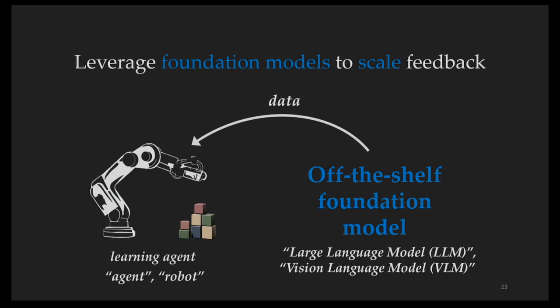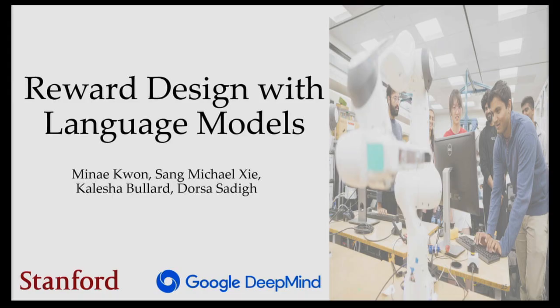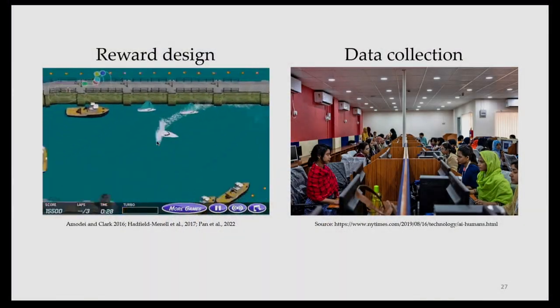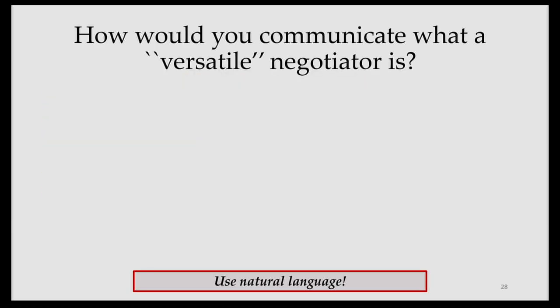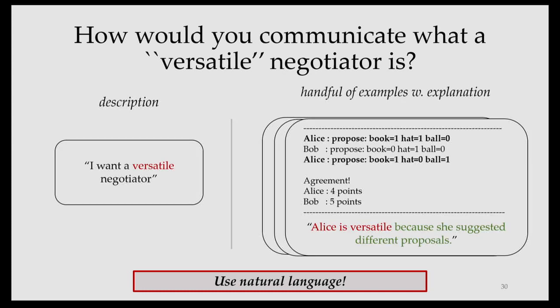This off-the-shelf foundation model is going to help train this learning agent. So let's first look at how we can scale feedback in the RL setting. Imagine your lawyer is representing you in a negotiation with a very important client. You tell your lawyer that you want them to take a more compromising or versatile approach — this lawyer would pretty much know what you'd mean. But imagine now that an AI agent is your lawyer. How would you communicate what a versatile negotiator is? Normally, you'd have to design rewards or collect data, which is not scalable. So instead, we're going to make it easier for humans to communicate their objectives by using language — either a description of their objective or a handful of examples with a label and explanation. The idea is that we're going to use an LLM to essentially act as a reward function in an RL training loop, so the user doesn't have to design the reward by hand.